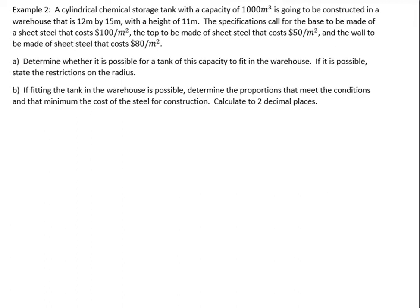Okay, example two. A cylindrical chemical storage tank with a capacity of 1,000 meters cubed is going to be constructed in a warehouse that's 12 by 15 with a height of 11. So if we think about this, 12 by 15, and then it's going to be standing up, right? And this is going to be like 11. If we have a cylindrical storage tank, what does that mean to us?